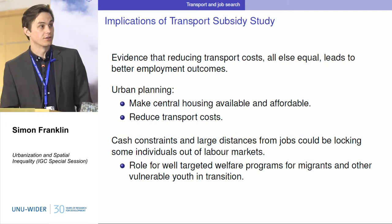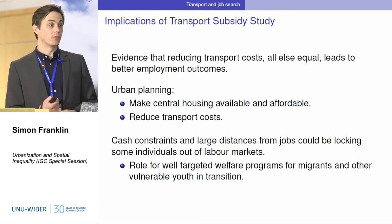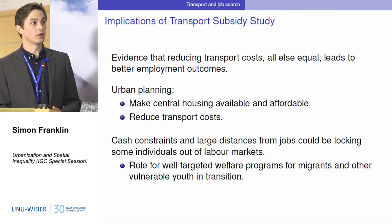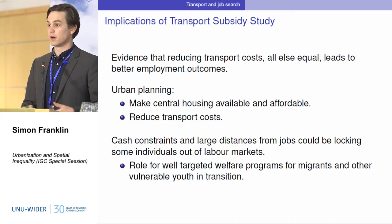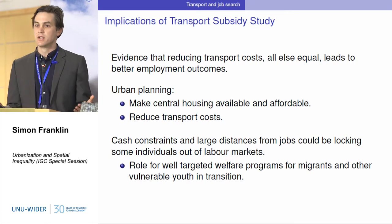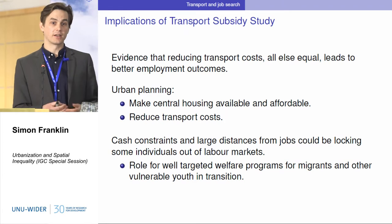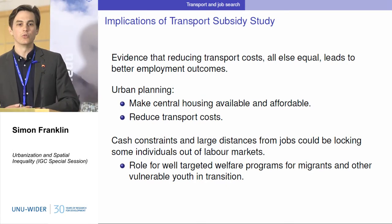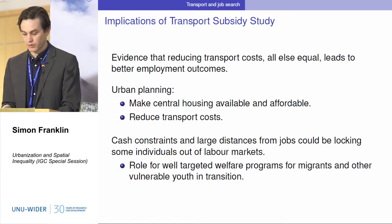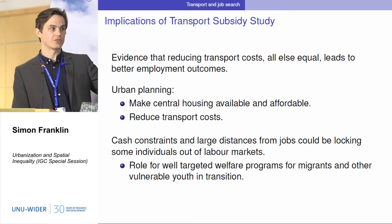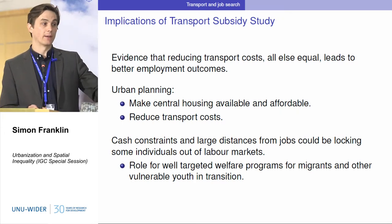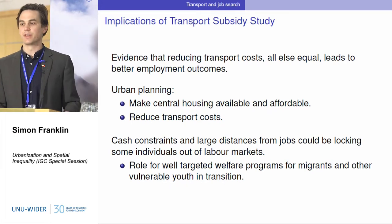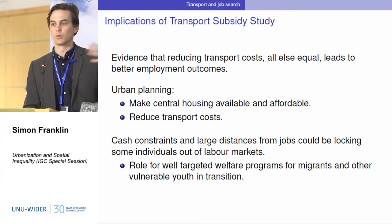There are two main implications of the study. One is for urban planning: talking about the need to make cities denser, create more housing in the centers so people are closer to employment opportunities and reduce transport costs. There's been an enormous expansion of the transport network in Addis recently with a light rail project — it's going to be really interesting to see what that does to labor markets. Secondly, it tells us something about how young people are cash constrained, and there's a role there perhaps for welfare programs and unemployment insurance — but important to think about how they're designed to support vulnerable, unemployed people.